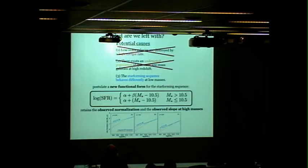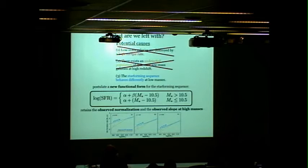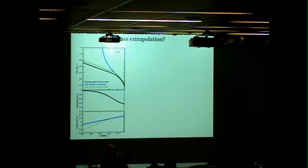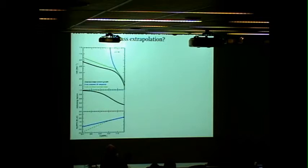The final possibility is that the star forming sequence behaves differently at low mass. Maybe it's not a single power law, maybe it has to get steeper at low mass. We postulate a new functional form with one shallow slope at high masses and a steeper slope at low masses. This retains the observed normalization and slope at high mass but is much steeper at low masses. This is it in green. It's much more stable, it works much better using a slope of unity for the low mass slope.